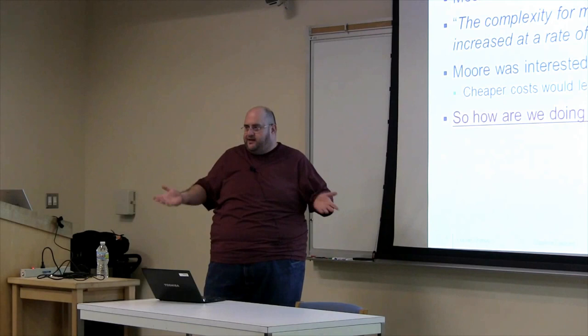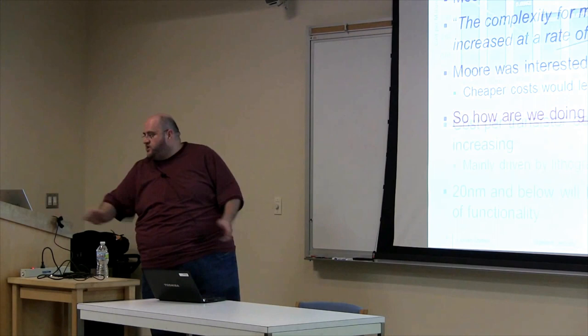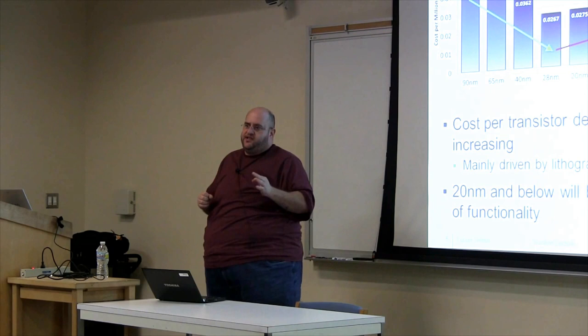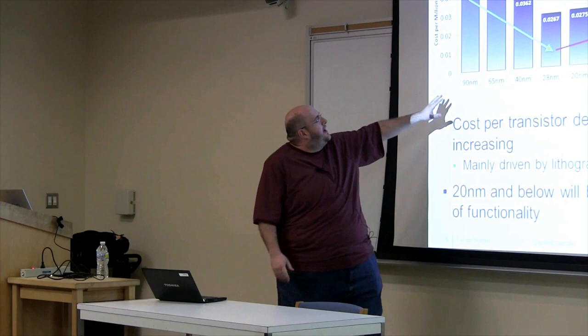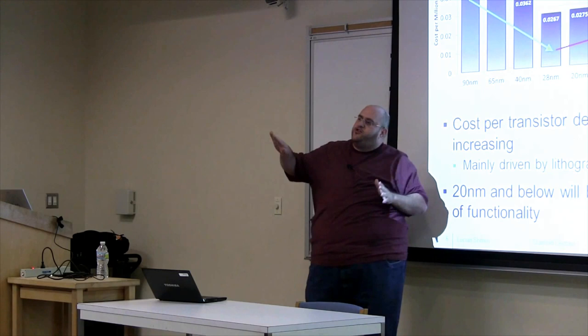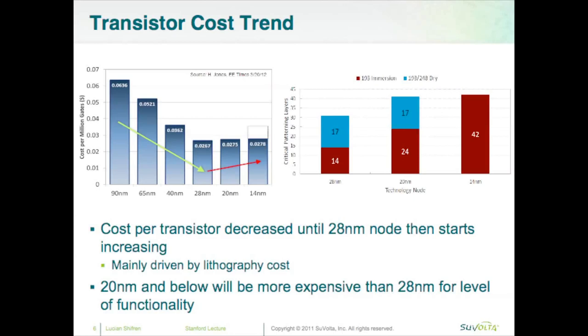If you're able to get the same functionality for half the cost, computing becomes ubiquitous. I have a phone in my pocket more powerful than a PC from 20 years ago, at a fraction of the cost. Intel keeps claiming they're on Moore's law, but I'm a numbers guy. What I have plotted here is the cost per million gates — essentially the cost per transistor on a die. You can see Moore's law was definitely working down to about the 28nm node, and then the cost per transistor starts to go up, meaning Moore's law is broken at the 20nm node.